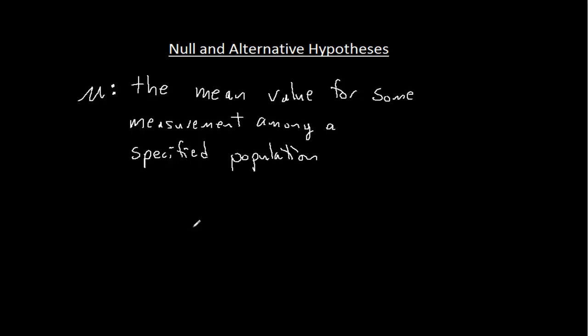The population is inaccessible — otherwise we don't need statistics. Because the population is inaccessible, we're going to draw a sample. We're going to look at some of the population, see what happens, and see what kind of conclusion we can draw about the entire population, just based on that sample.